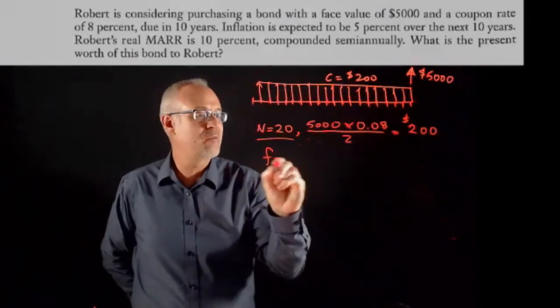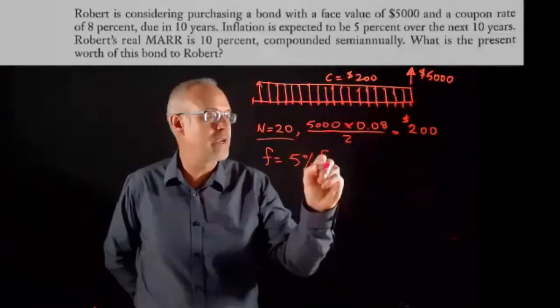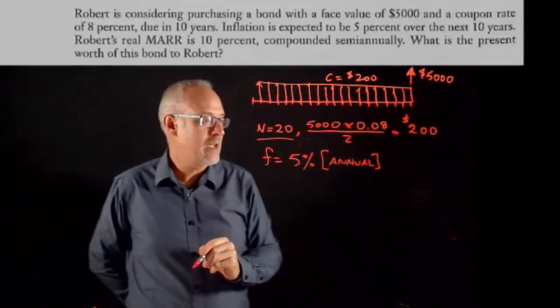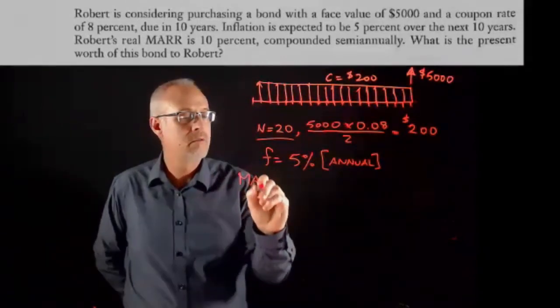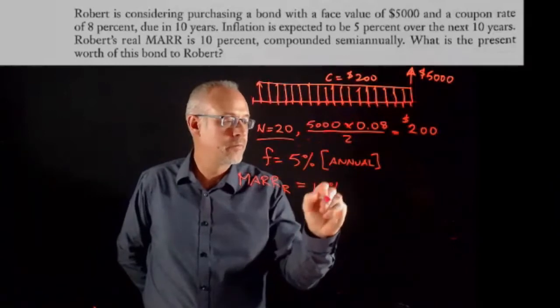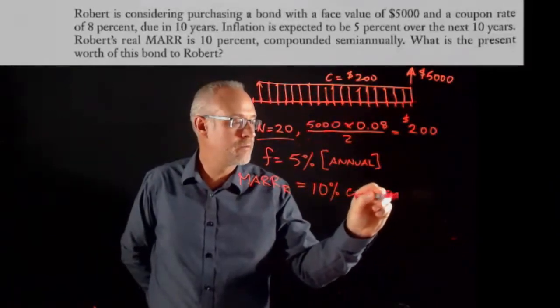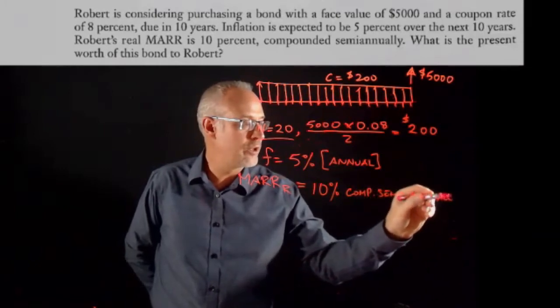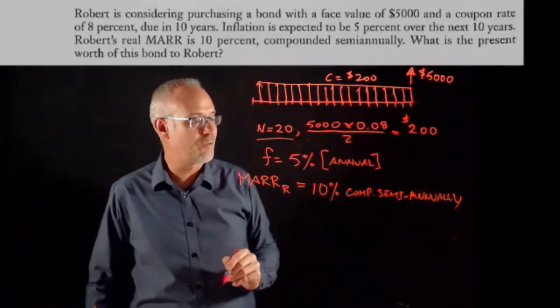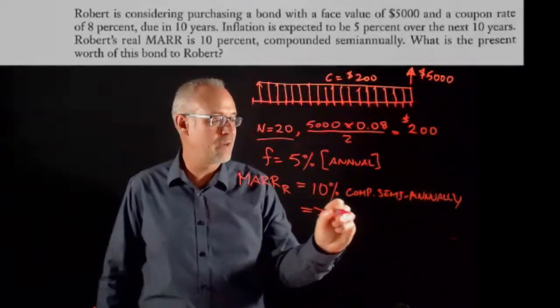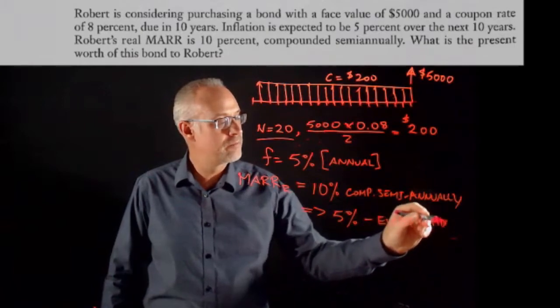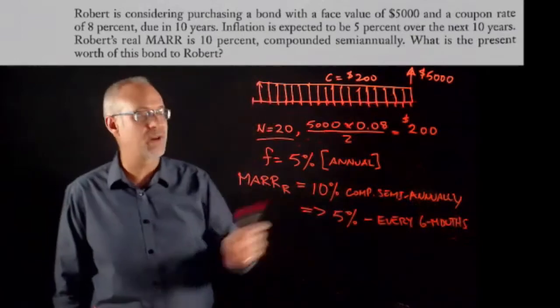Inflation is expected to be 5%, but that's an annual rate. That could cause a problem for us. And then we have a MAR, we have a real MAR. MAR real for Robert is 10% compounded semi-annually. So I have a feeling we'll have to calculate his MAR for a six-month period. That's going to be 5% every six months.